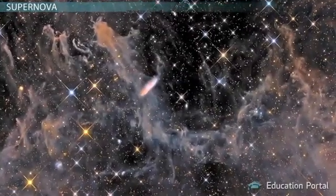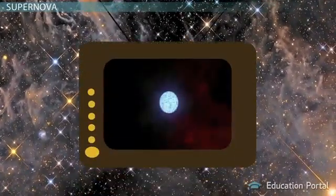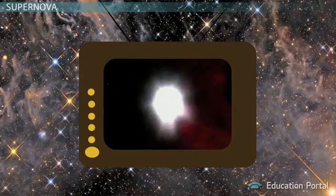Stars which are eight times or more massive than our sun, whether they are red giants or red supergiants, end their lives in a most spectacular way. They go supernova.